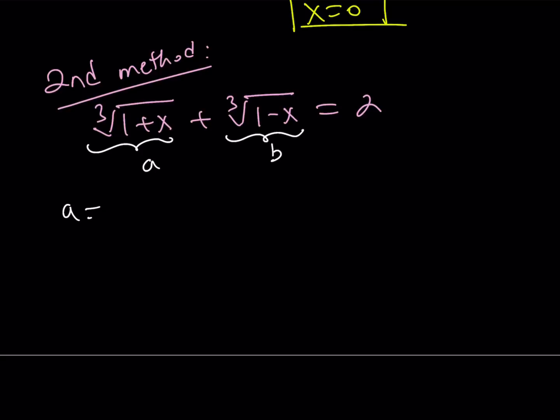We have A equals cube root of 1 plus x, and B equals cube root of 1 minus x. From here, we get A plus B equals 2.